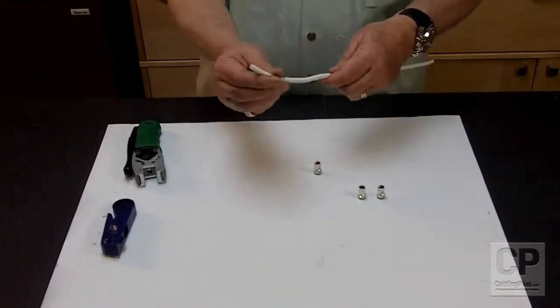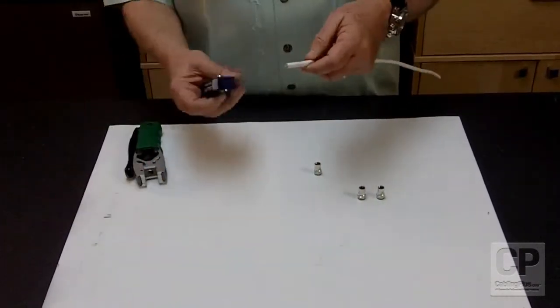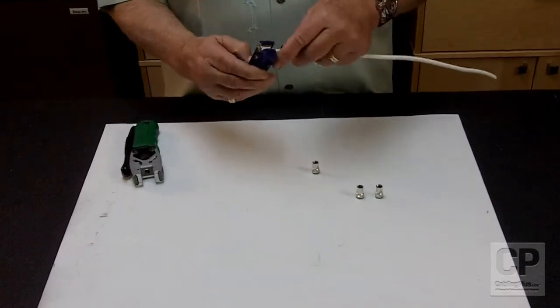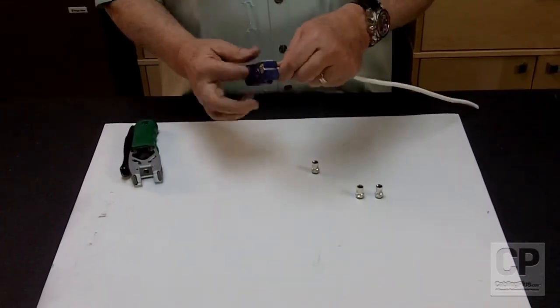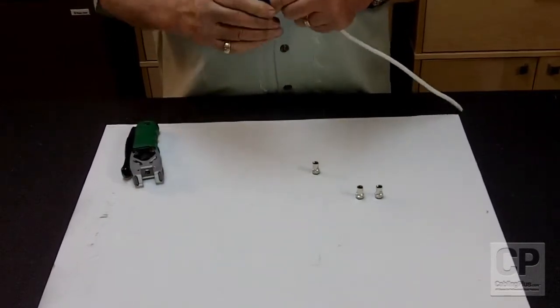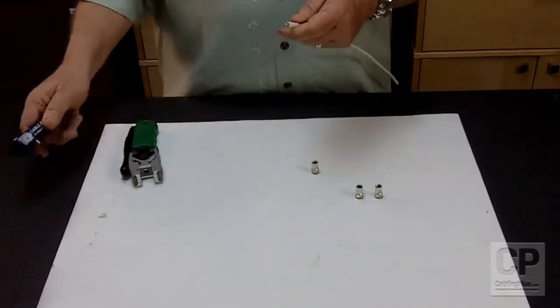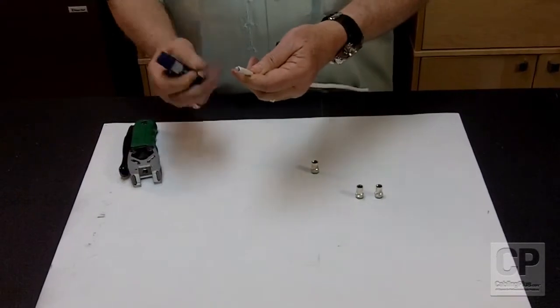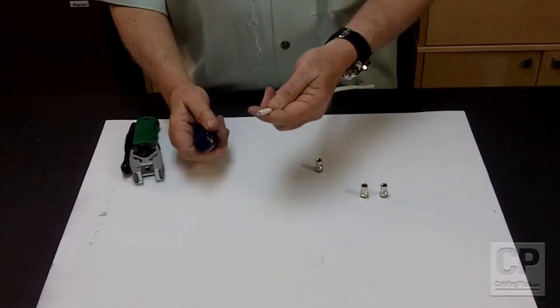So the first thing you want to do is grab your RG6. The RG6 has a 60% braid. You want to insert it into the stripper. Turn the stripper several times forward, a couple times back, and pull off the excess. You're going to expose the center conductor. You have your quarter inch of center conductor exposed.